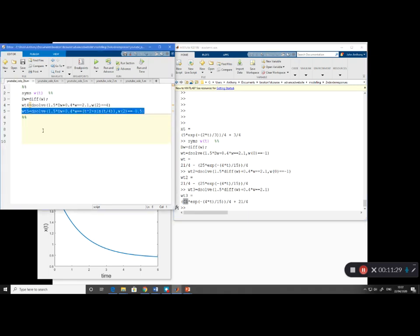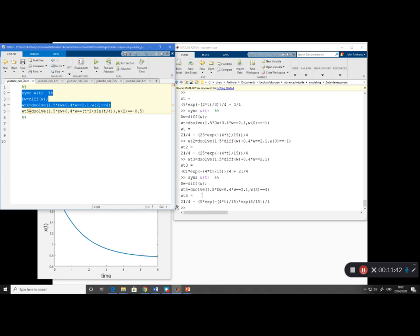What about this next one? This next one is to show that your initial condition doesn't have to be at time t equals 0. So if you look at line 4, you'll see here I've given the initial condition at time 2. So if I run those three lines, then you'll see MATLAB's quite happy.